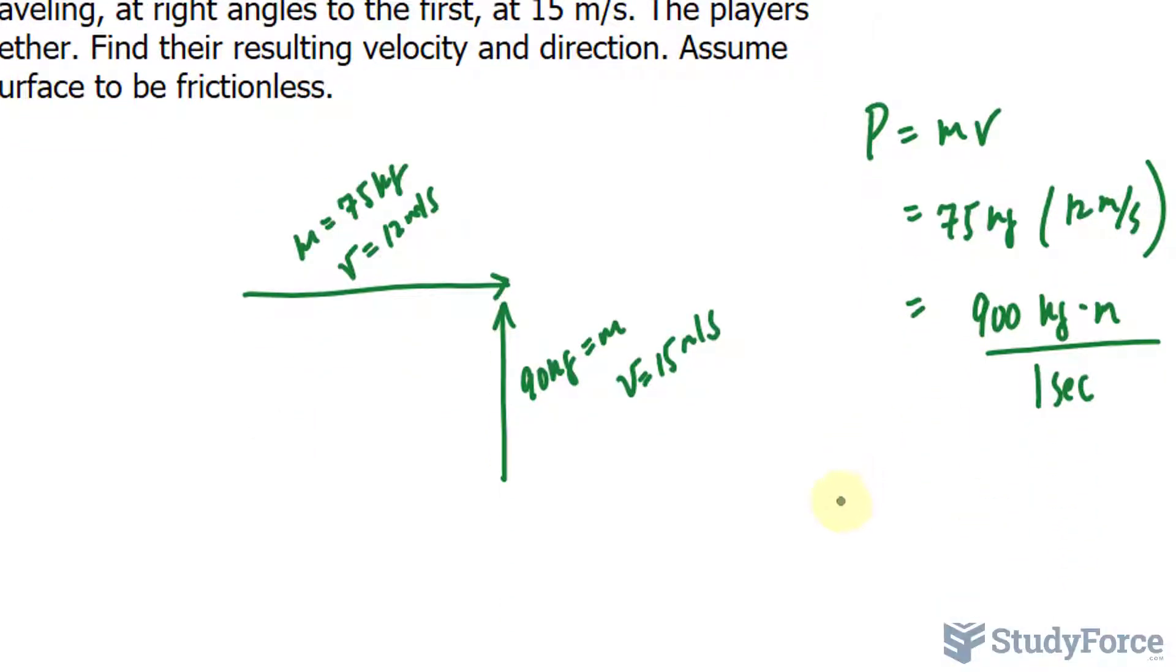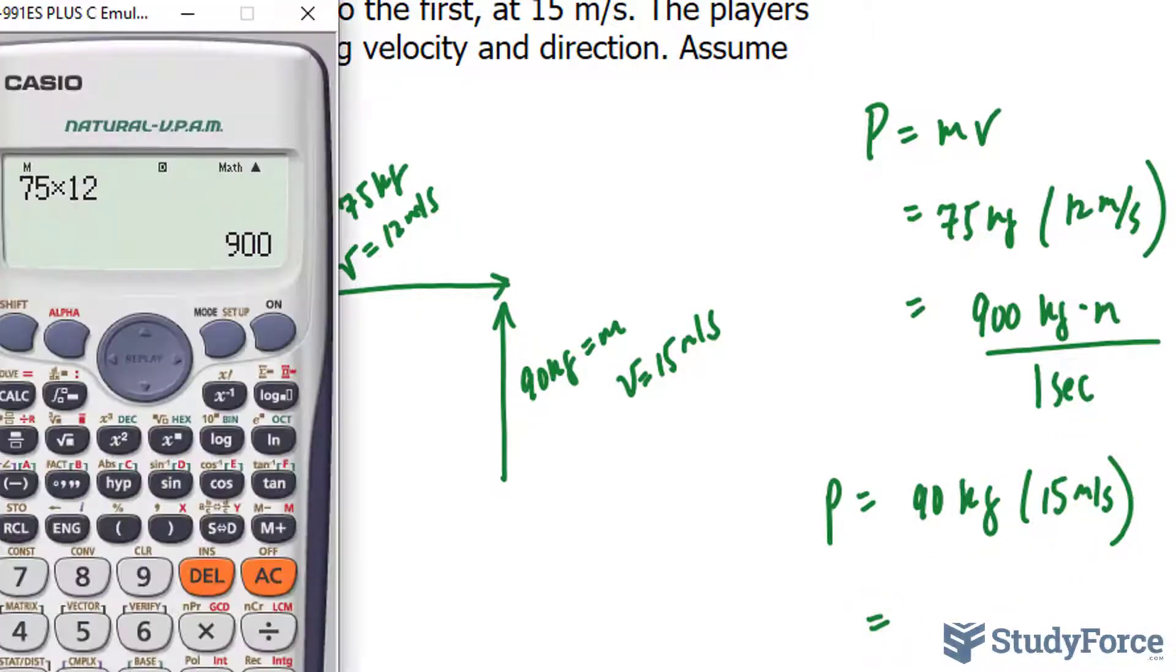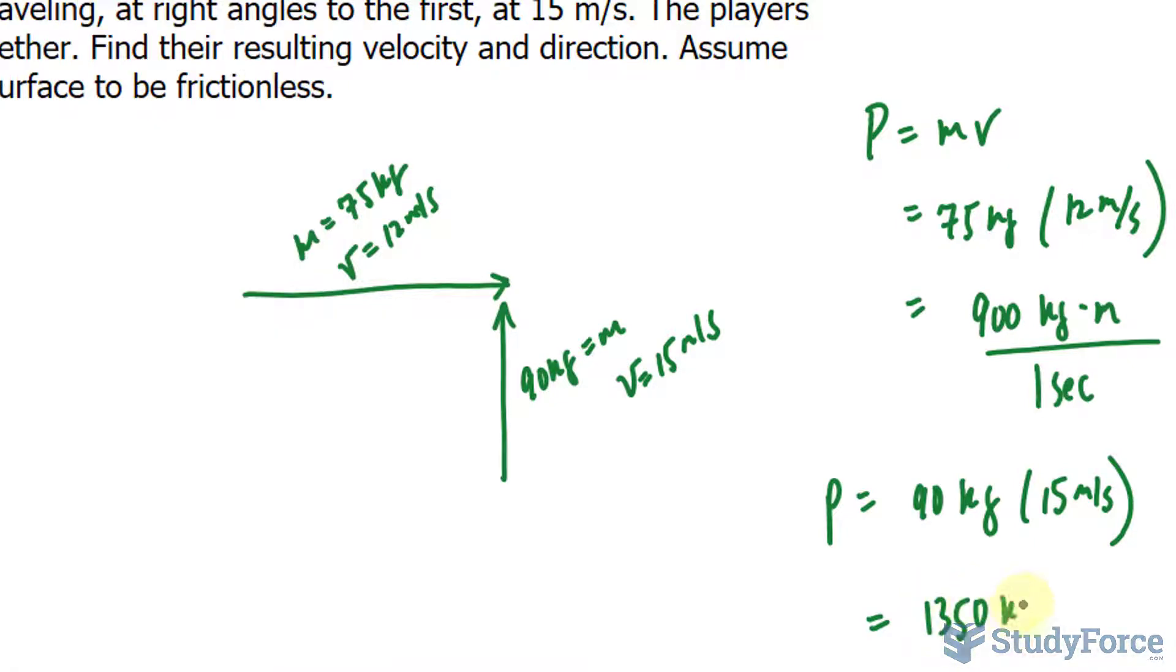And for the other player, again, same formula: 90 kilograms times a velocity of 15 meters per second. Let's use our calculator. That gives us 1350 kilograms times meters per second.